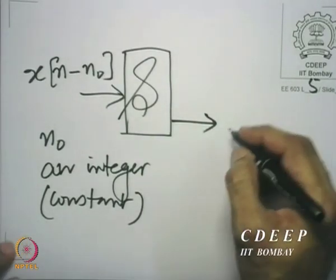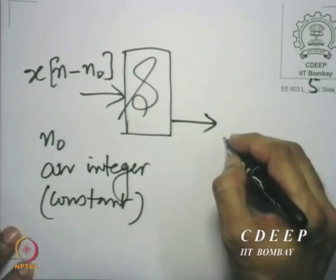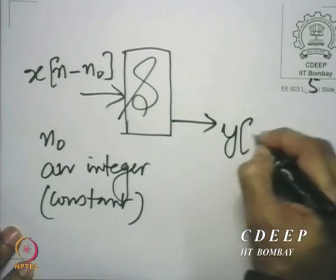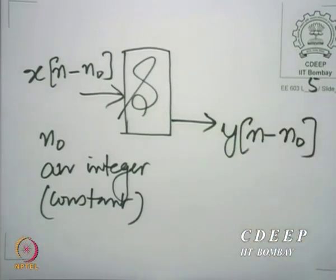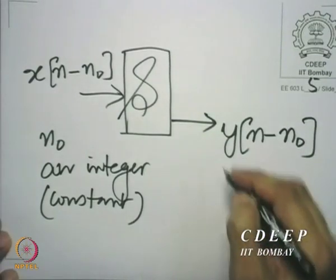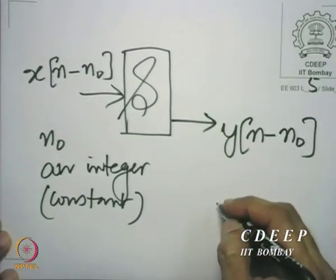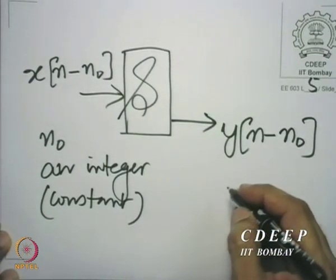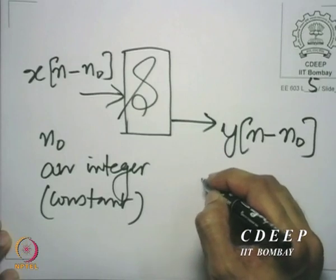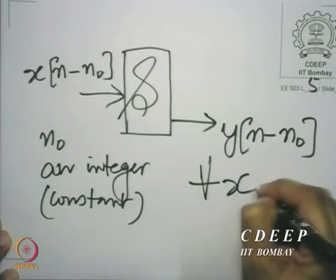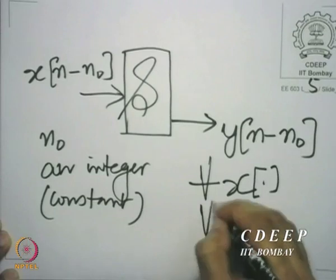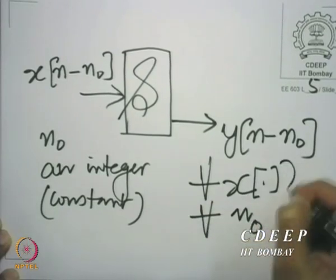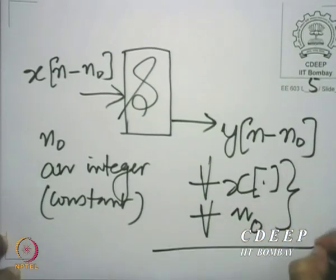A system is shift invariant if and only if the output is also y of n minus n0. This needs to hold for all x[n] and for all n0. This is very important.